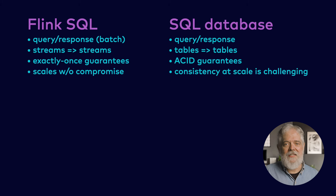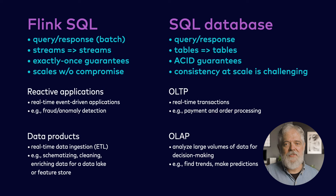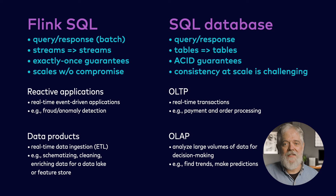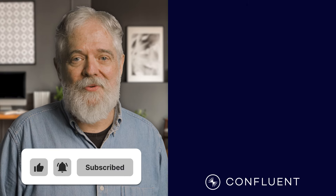Flink can maintain this exactly once guarantee at almost any scale you might need, up to clusters with hundreds or even thousands of compute nodes. On the other hand, SQL databases can struggle to provide strict consistency and isolation guarantees as they scale up. As with SQL databases, most use cases for Flink SQL fall into one of two categories: first, reactive event-driven applications such as fraud or anomaly detection, and second, building reusable data products — involving cleaning, enriching and schematizing data before storing it in the data lake or feature store for use by other applications. I'm working on more videos about Flink SQL — let me know in the comments below what you'd like to see covered.